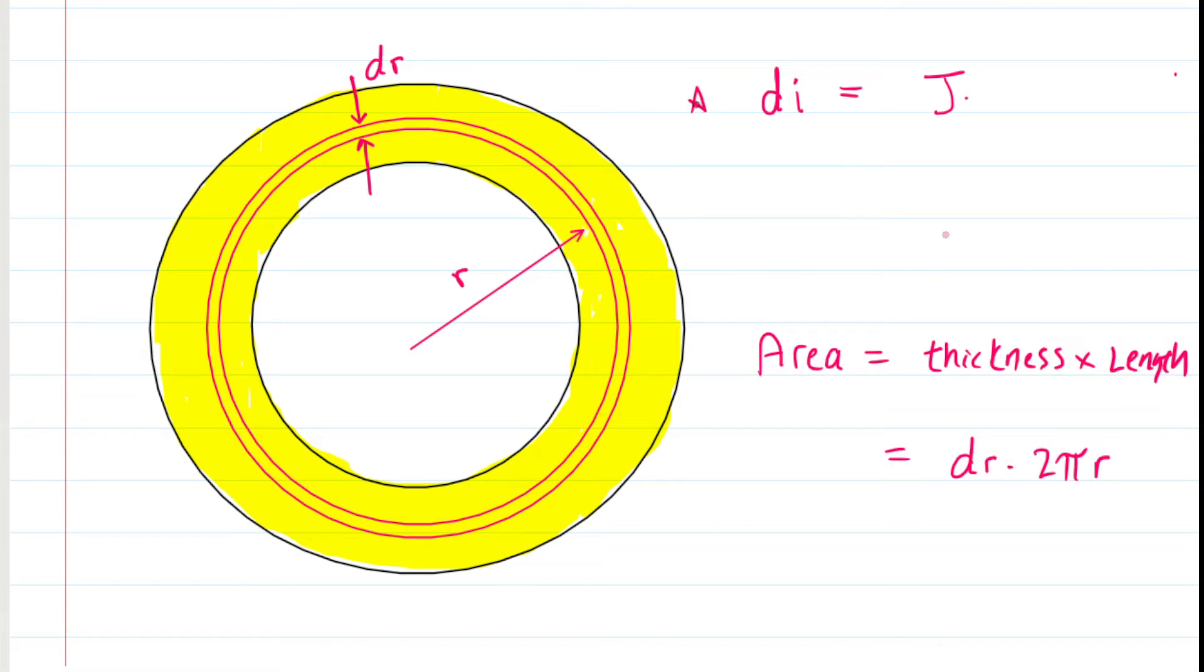So, going back to our current equation, we were calculating the teeny-tiny amount of current that's flowing through that thin ring. We were going to take the current density and then multiply it by the area. And we just showed that the area is the dR times 2πR. Now, the question gave us the current density based on the radius. It was that 3 times 10 to the power of 8, and then it was multiplied by R squared. So, we can substitute that for the current density. So, this expression is going to give us the amount of current that's flowing through that teeny-tiny ring.